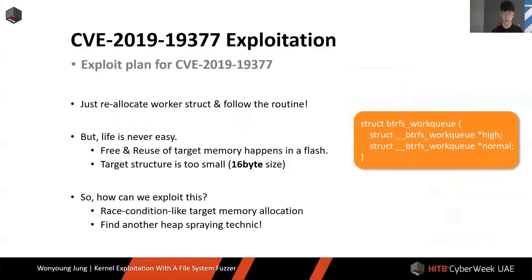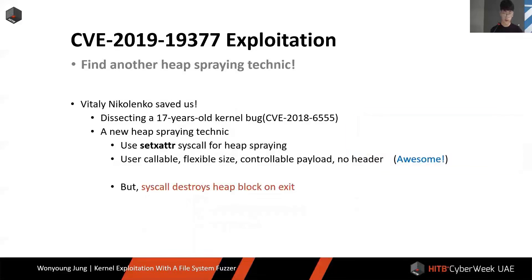It sounds easy — just reallocate the worker structure and follow the routine. But there are some problems. First, the free and reuse of the target structure happen in close timing. Second, the target structure is too small — only 16 bytes. So we use a race condition for allocation and find another heap spraying technique. In detecting a 17-year-old kernel bug, Vitaly uses a new heap spraying technique for 16-byte-sized spraying. It is user-callable, flexible, controllable, and no header included.